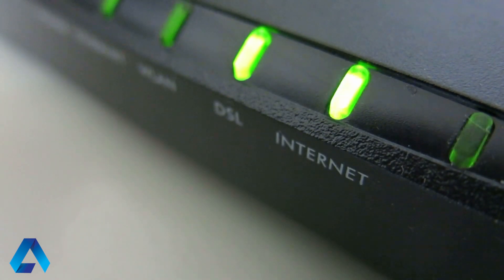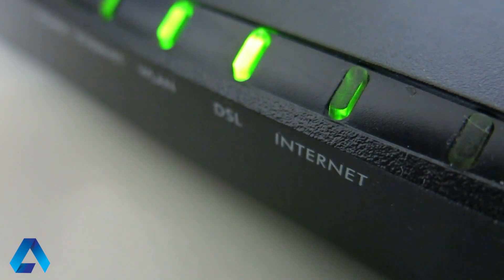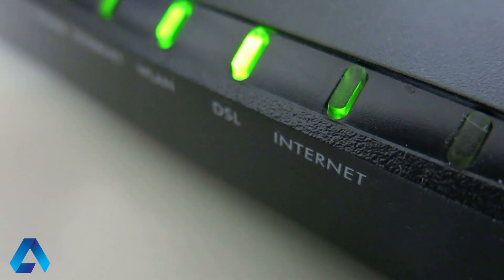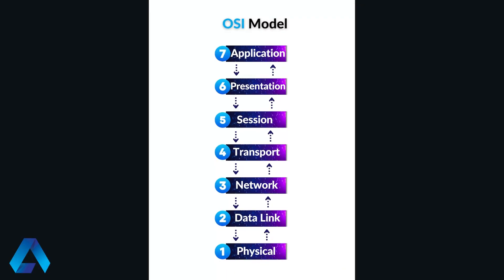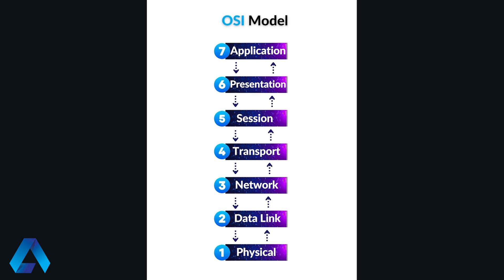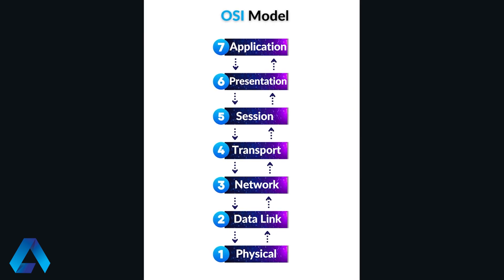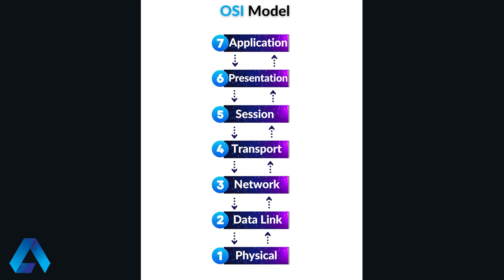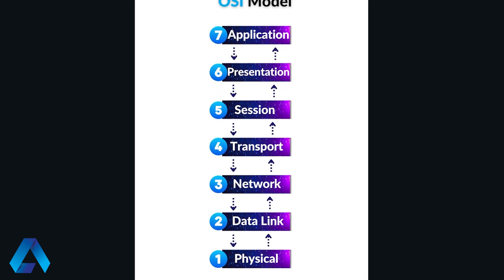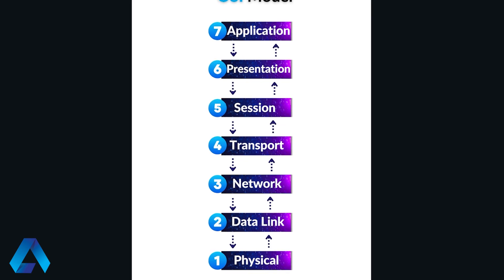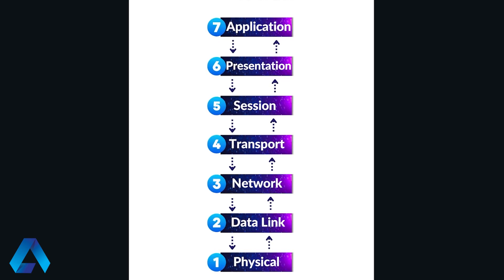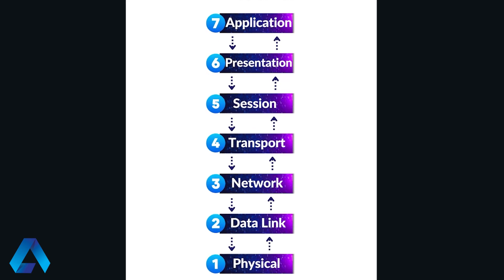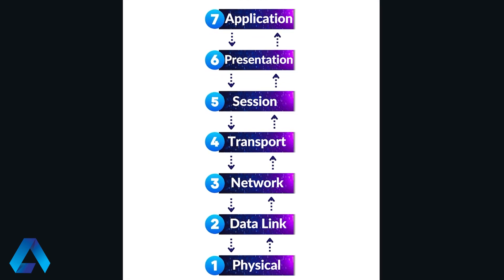Things that we take for granted today, such as sending an email to someone across the world, were simply not possible before this model came along. The OSI model consists of seven layers, as can be seen on the screen. Each of these layers is responsible for a specific aspect of network communication.